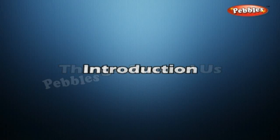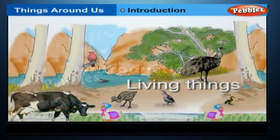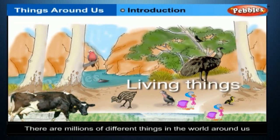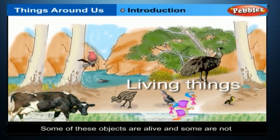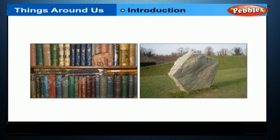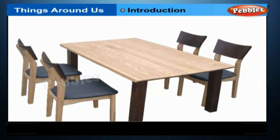Things Around Us: Introduction. There are millions of different things in the world around us. These things differ in many ways. Some of these objects are alive and some are not. People, cow, sparrow and tree are alive. But books, stones, chairs and tables are not. In this chapter, we will study the characteristics of living things and non-living things.